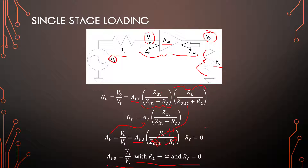So those are the three ways to view amplifier gain: maximum gain, loaded gain, and total gain.